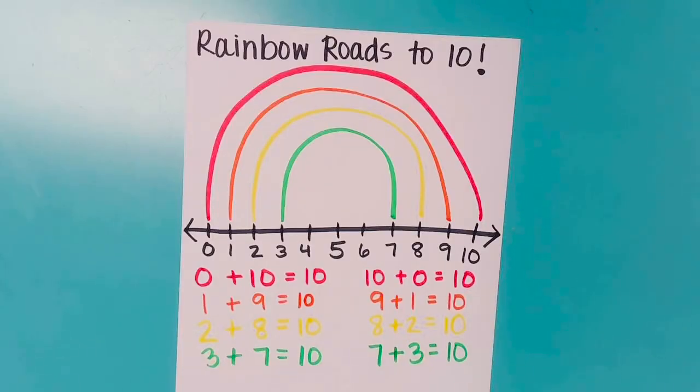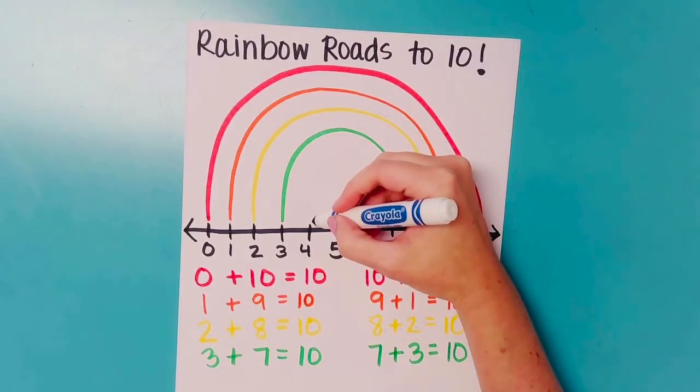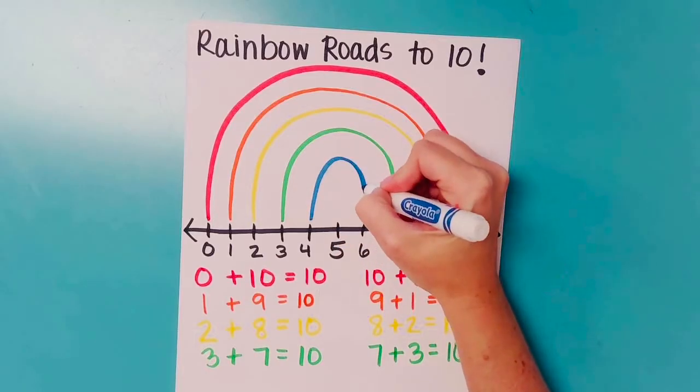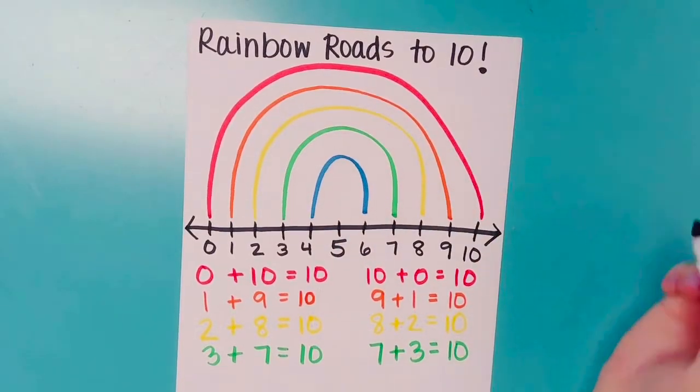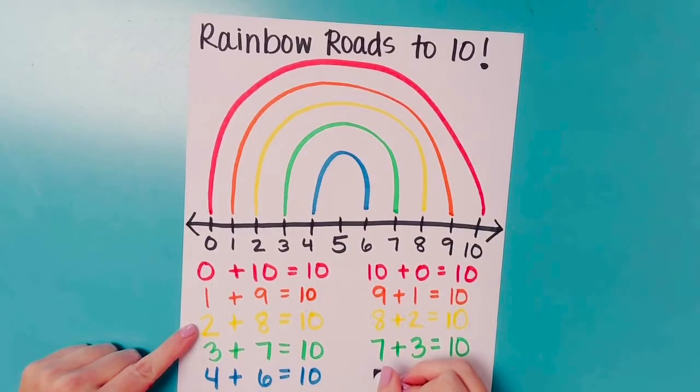Next is blue. 4 connects to 6. 4 plus 6 equals 10. And let's flip it around. 6 plus 4 equals 10.